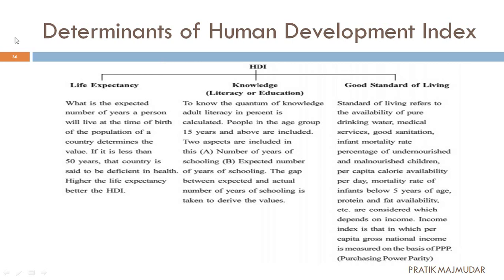In simple words: अगर एक आदमी ने जन्म लिया है तो अगर वो पचास साल से कम जीता है तो उसे डेफिसियंट इन हेल्थ बोला जाएगा — उस country की actual health care services अच्छी नहीं है। पर अगर वो आदमी पचास साल से ज्यादा जी रहा है तो उस country की life expectancy अच्छी है और ये HDI report में अच्छी चीज़ show होगी।